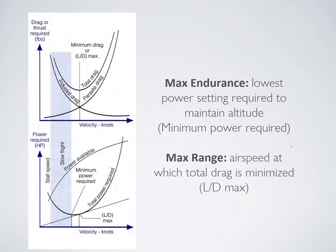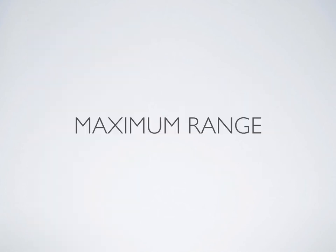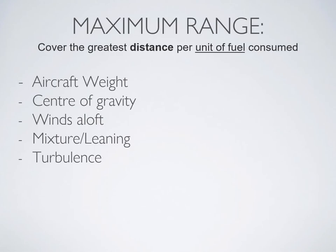Now you understand the difference between maximum range and maximum endurance and how to find them from the aircraft POH. But is your maximum range power setting and airspeed from the POH always going to give you maximum range? The real answer is no. Things like aircraft weight, center of gravity, mixture or leaning, winds aloft, and turbulence can all have a significant impact on how far your plane can fly.